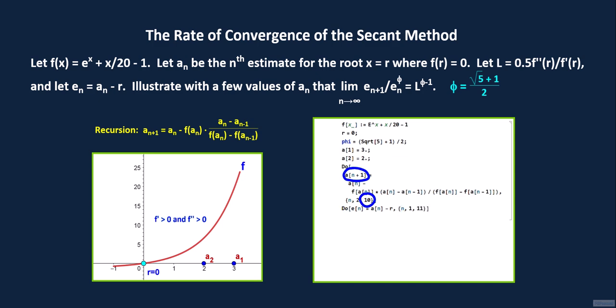Next, we calculate the fractions e sub n plus 1 divided by e sub n raised to the phi-th power. For this, we use the table command. Inside the table command, we have e sub n plus 1 divided by e sub n raised to the phi-th power. e sub n starts at e sub 1, and so n starts at 1. The final value of e sub n is e sub 11, and so setting n plus 1 equals 11, we have n equals 10 as the final value of n for this table.